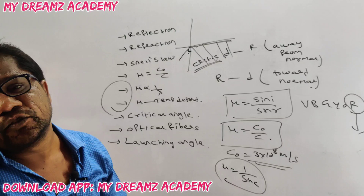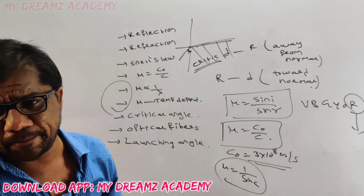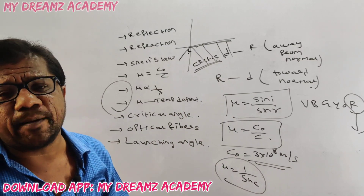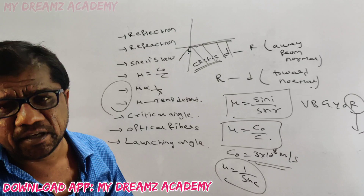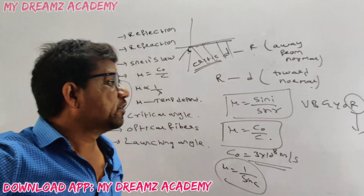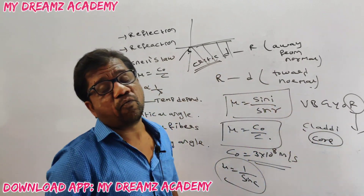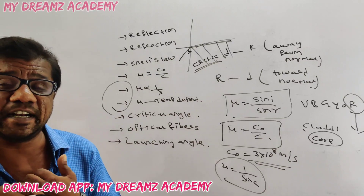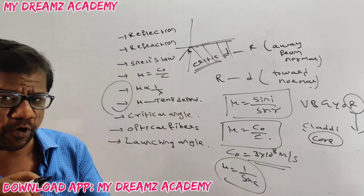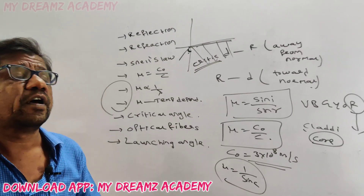Total internal reflection: if the angle of incidence is greater than the critical angle, and light is moving from a denser medium to a rarer medium, the light is totally reflected back. This phenomenon is called total internal reflection. Rainbow formation and mirage formation are based on total internal reflection. Importantly, total internal reflection occurs only when light moves from denser medium to rarer medium — not from rarer to denser.